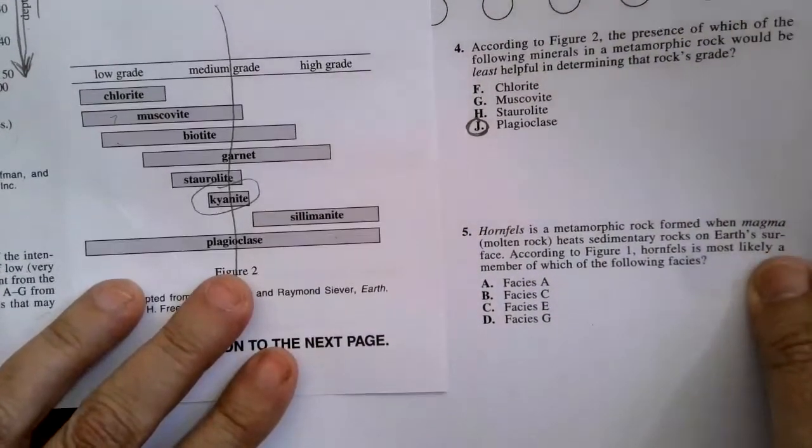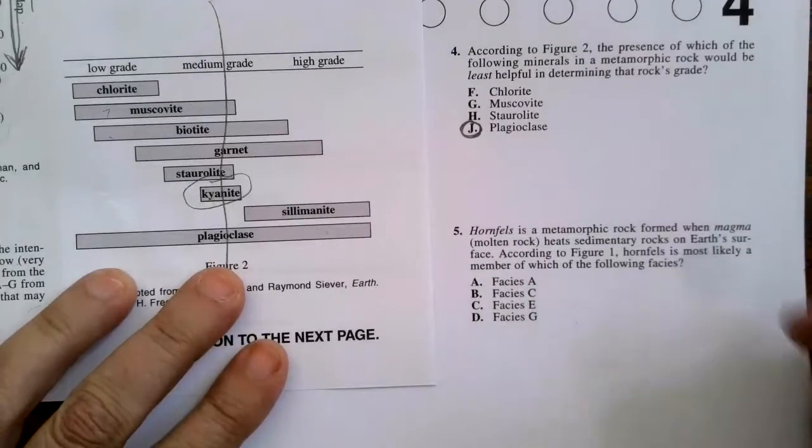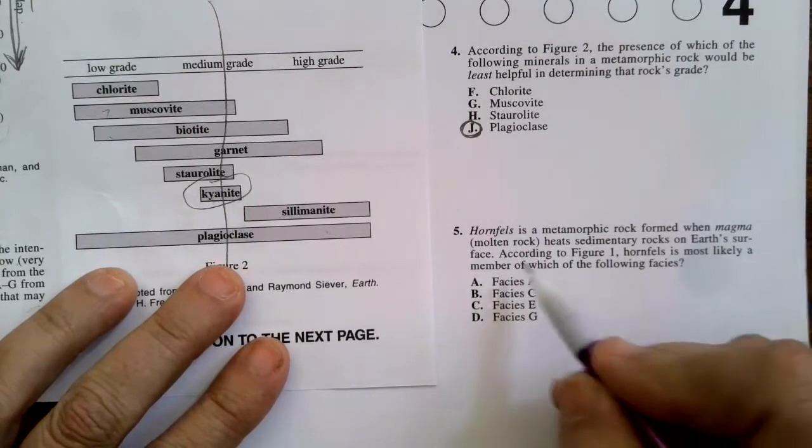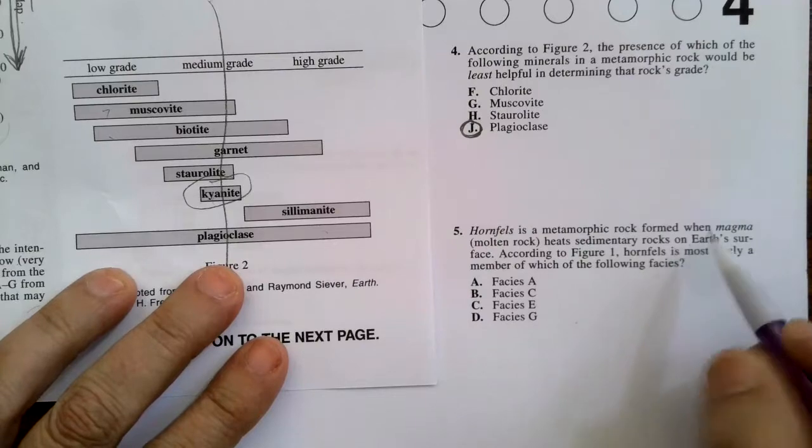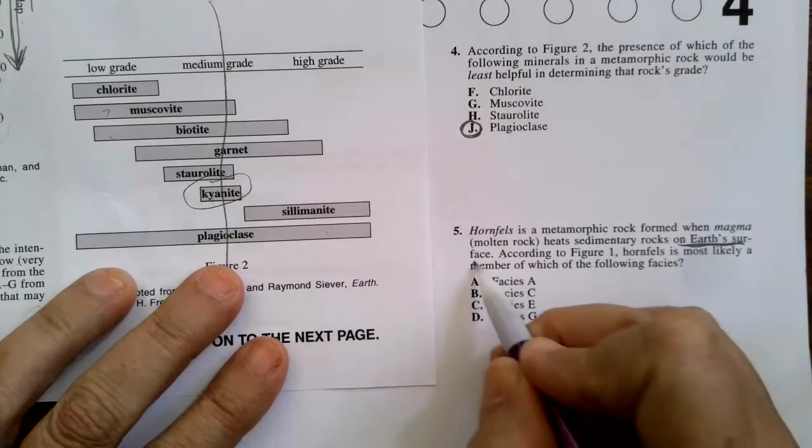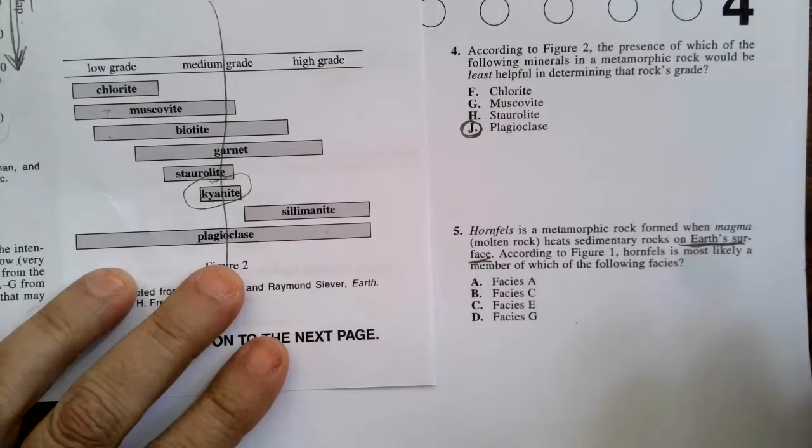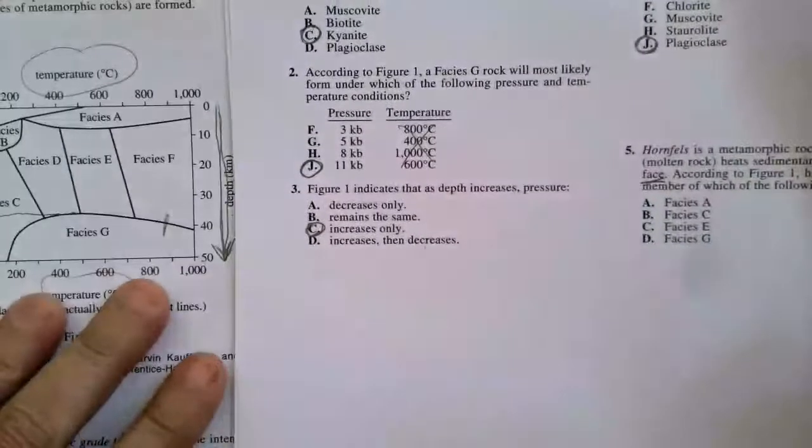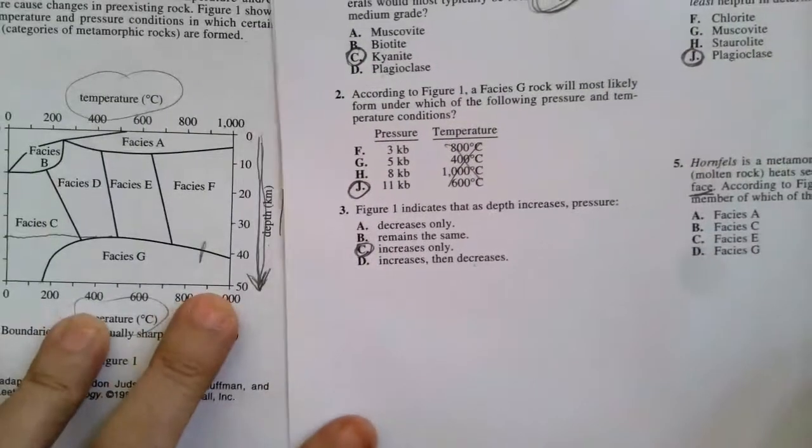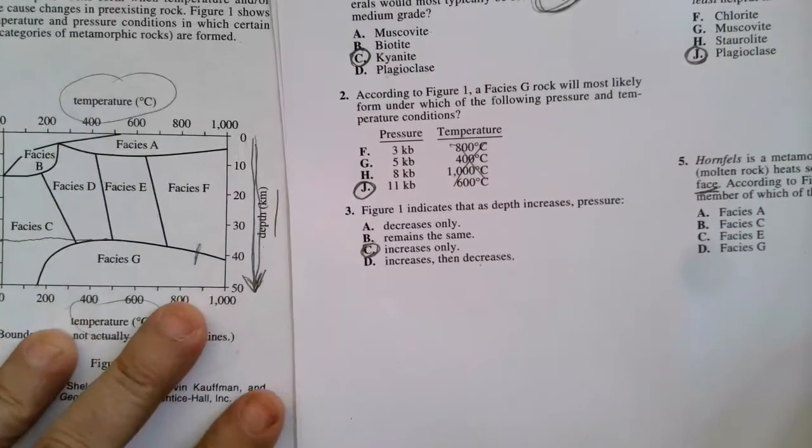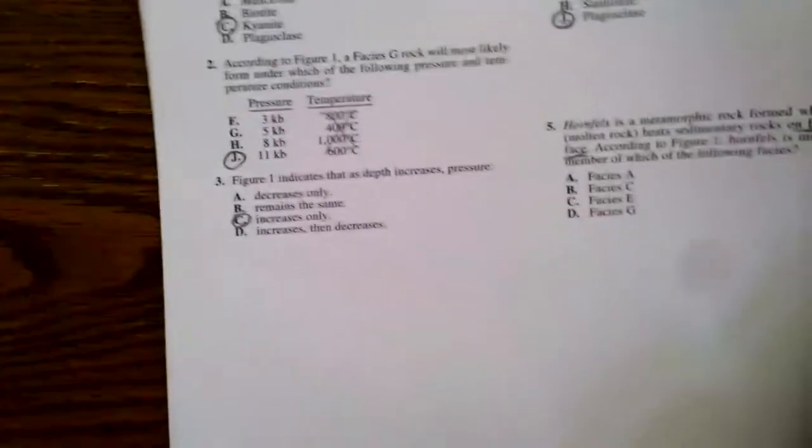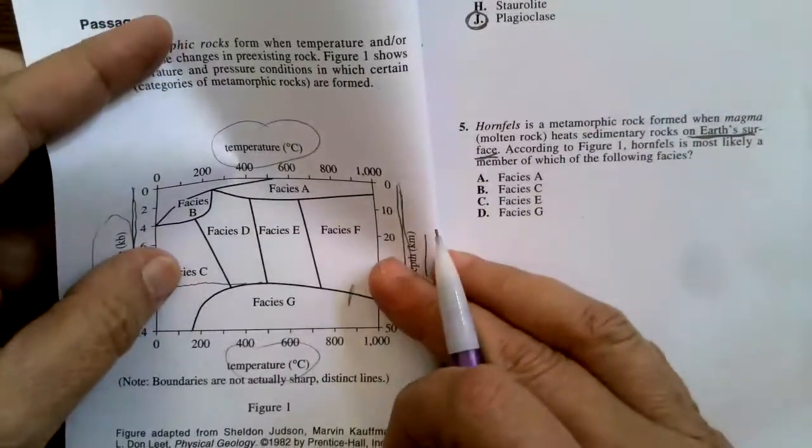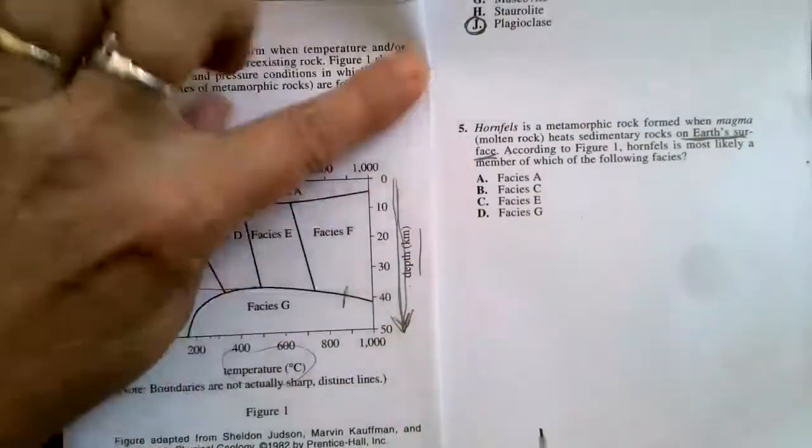Number five. Hornfels is a metamorphic rock formed when magma, molten rock, heats sedimentary rocks on Earth's surface. That's a clue. We're going to want to look at depth. According to figure one, hornfels is most likely a member of which of the following facies? So it's at the surface, Earth's surface, so depth would be zero.